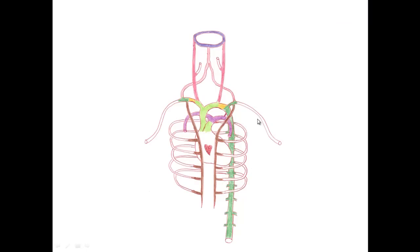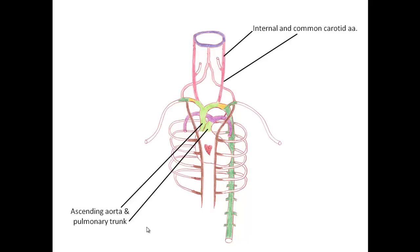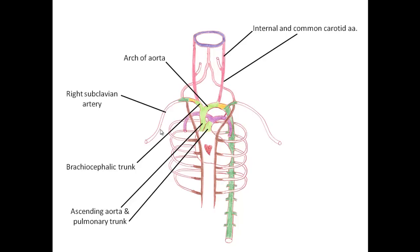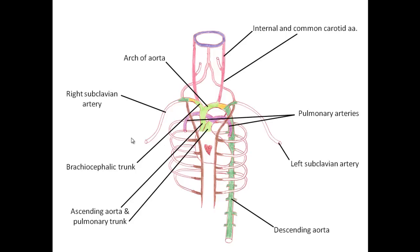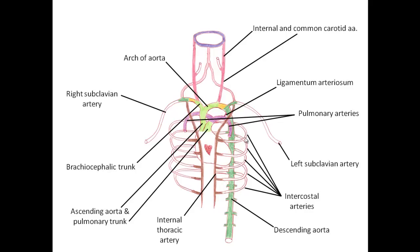Here we are at the final step. The mature blood vessels have formed, color-coded the same way as before: ascending aorta and pulmonary trunk from the truncus arteriosus; internal and common carotid arteries from the third arch; arch of the aorta largely from the aortic sac, as is the proximal brachiocephalic trunk; right and left subclavian arteries from the seventh intersegmental artery; descending aorta from the dorsal aorta; pulmonary arteries from the sixth aortic arch; ligamentum arteriosum from the left sixth arch; internal thoracic and vertebral arteries from the seventh intersegmental — one going inferiorly posterior to the sternum, the other extending superiorly toward the basilar. Intercostal arteries connect the dorsal aorta to the internal thoracic, and the vertebrals fuse to form the basilar meeting the circle of Willis.